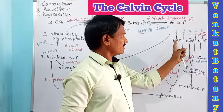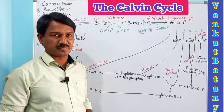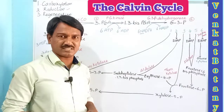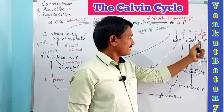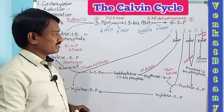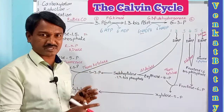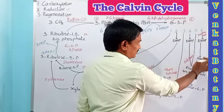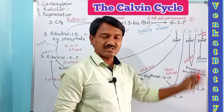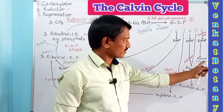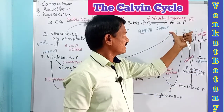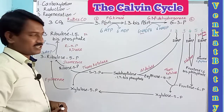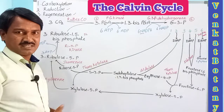Six molecules of G3P are formed. Three of these G3P molecules undergo isomerization to form three molecules of dihydroxyacetone phosphate (DHAP), which is its isomer. One of these DHAP molecules migrates towards the cytoplasm and is converted into glucose. The remaining five G3P molecules enter the third step: the regeneration phase.